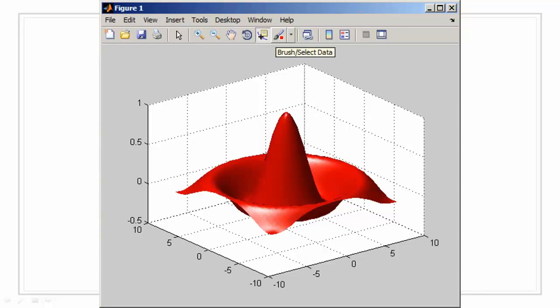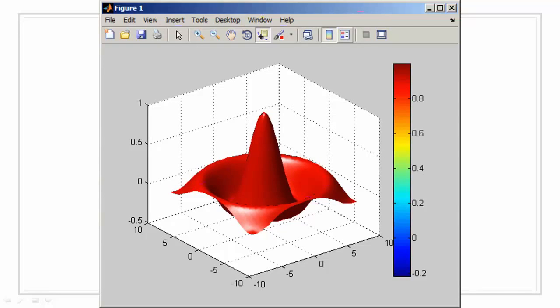Data brushing, we have already seen this option in the previous video. We have the link plot option, where we can link the common data plot points between two graphs. This also has been covered in the previous videos.